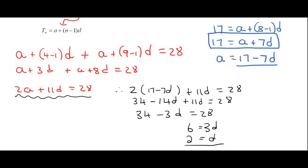We can then plug that answer into here. And so we would find that A equals 17 minus 7 times 2, so A is going to be 17 minus 14, and so A is 3.